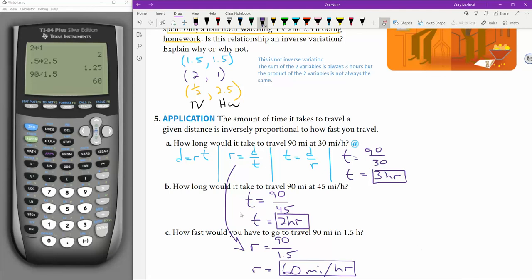There we go. And you can see how that's inverse variation because we're doing 90 divided by the input. 90 divided by the input. 90 divided by the input. Okay. Because the distance is never changing. That's kind of our constant of proportionality. 90, 90 miles, 90 miles, 90 miles.